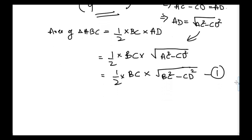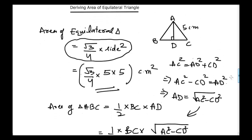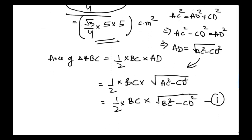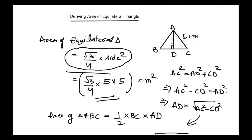Now, what is the value of CD in terms of BC? If we can find that, it will solve our problem and we will be able to derive the formula. There is a property of equilateral triangles: a perpendicular drawn to any side from a vertex divides that side into two equal parts. So CD equals BD, or in other words, CD equals half of BC.